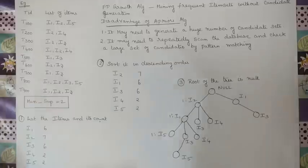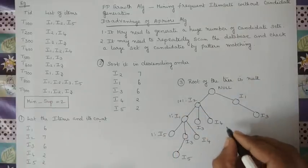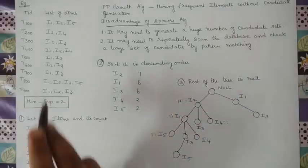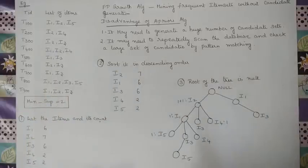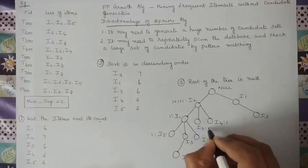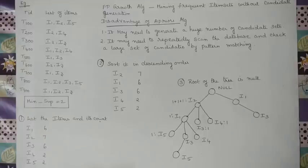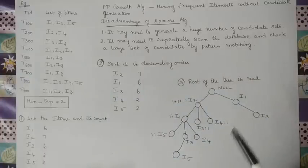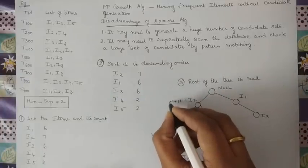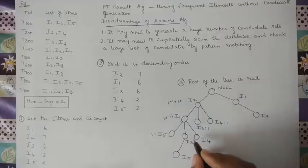Moving on with the second transaction — I2, I4 — it is already ordered. I2 occurs for the second time, so its count is incremented. Then transaction 3 is I2, I3, already ordered. I2 is already there, so I3 is added with count 1. Transaction 4 is I1, I2, I4 — arranged in descending order as I2, I1, I4. I2 gets plus 1, I1 gets plus 1, and I4 is added for the first time on this route.